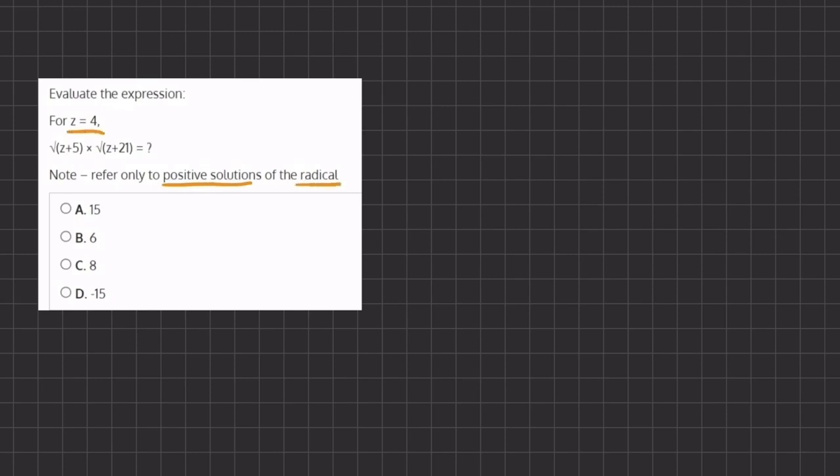So let's plug in our value of z into our expression. We have radical 4 plus 5 times radical of 4 plus 21. If we simplify, we get radical 9 times radical 25.